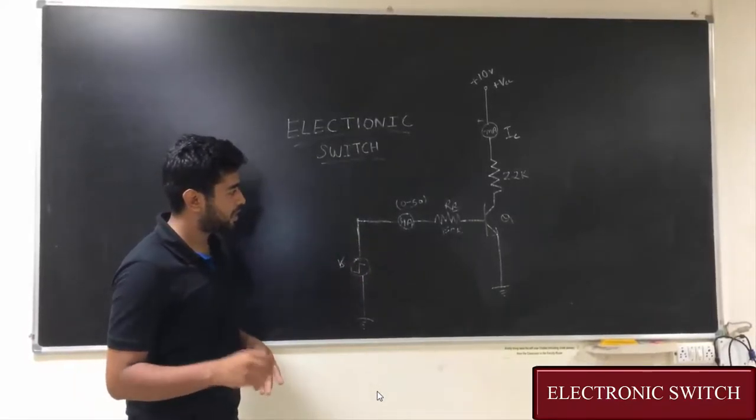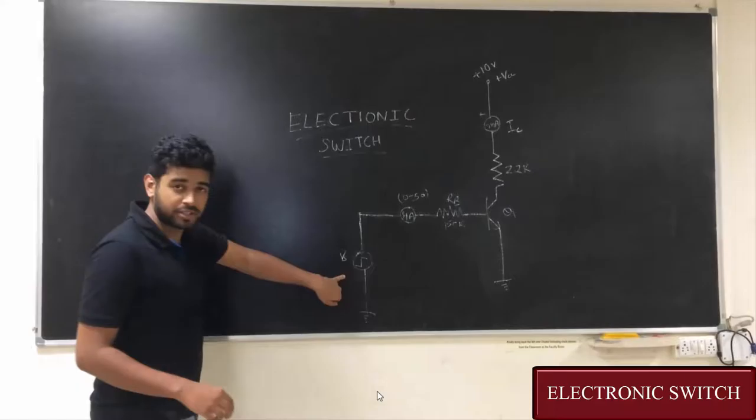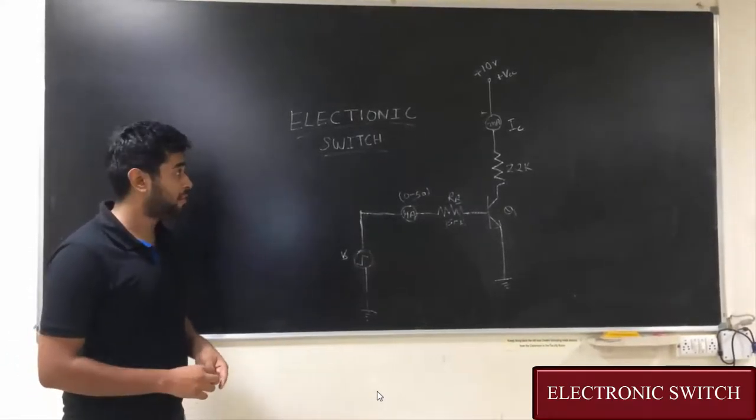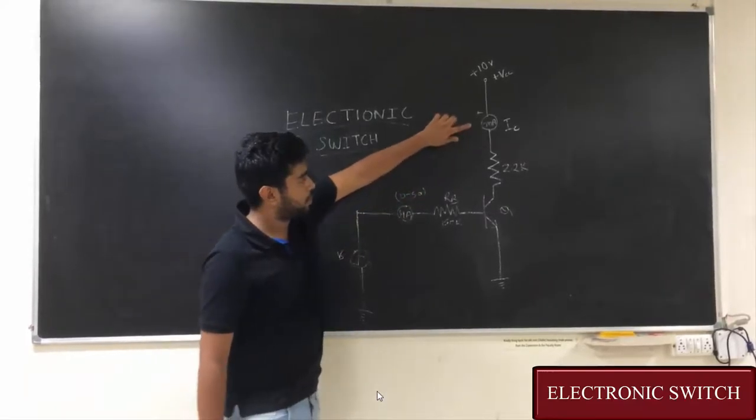The BJT is set as Common Emitter Configuration. The input is given from here, which is a square wave. The input is measured here and the output is measured here.